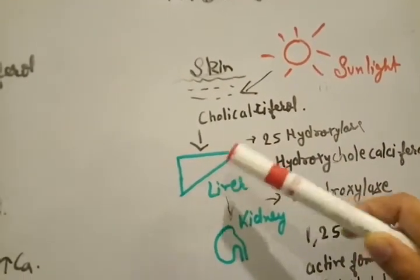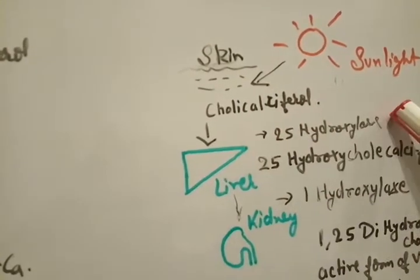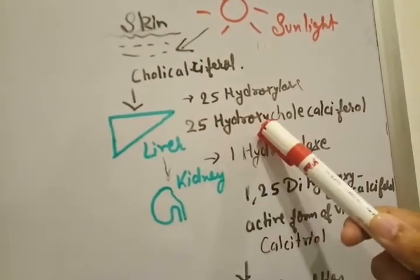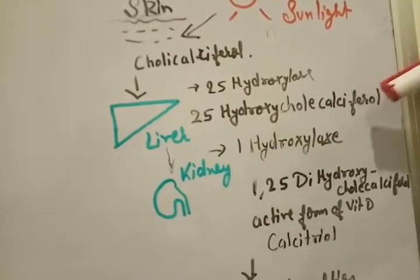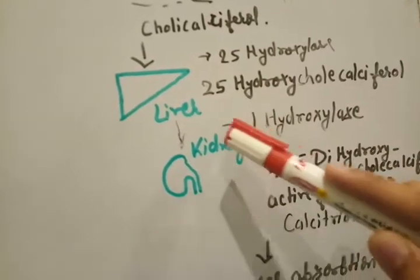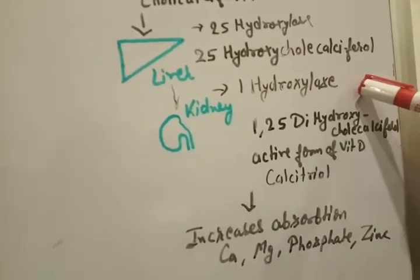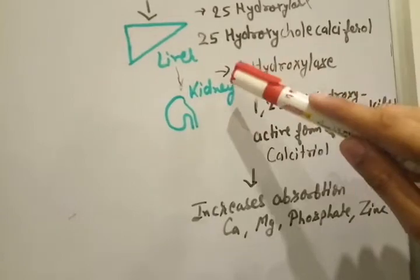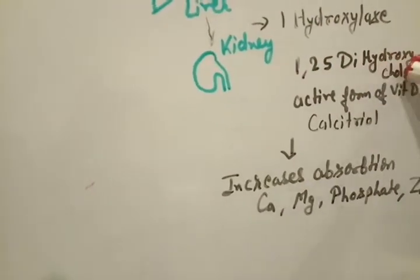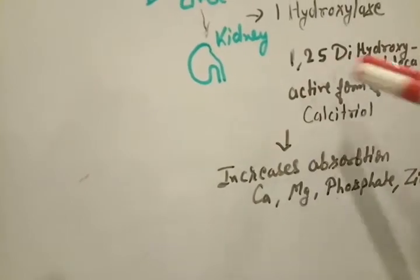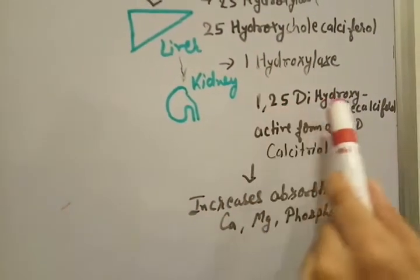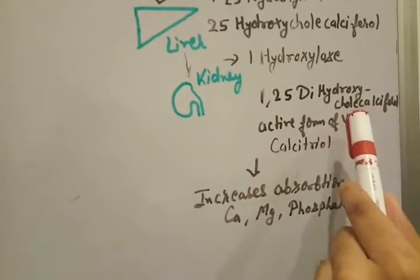In liver in the presence of 25 hydroxylase enzyme it converts into 25 hydroxycholecalciferol. Then in kidney in the presence of 1 alpha hydroxylase, in kidney it converts into 1,25 dihydroxycholecalciferol. Why di? Because 25 and 1 from this enzyme, then 1,25 dihydroxycholecalciferol.